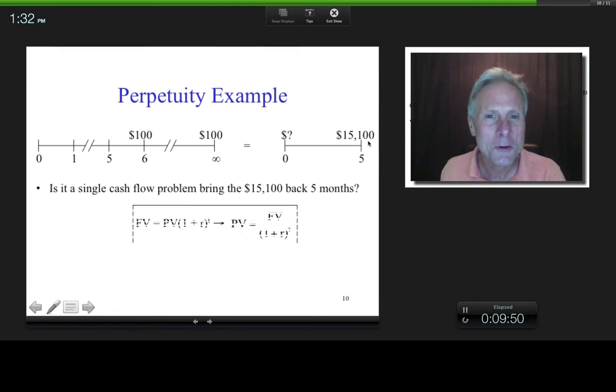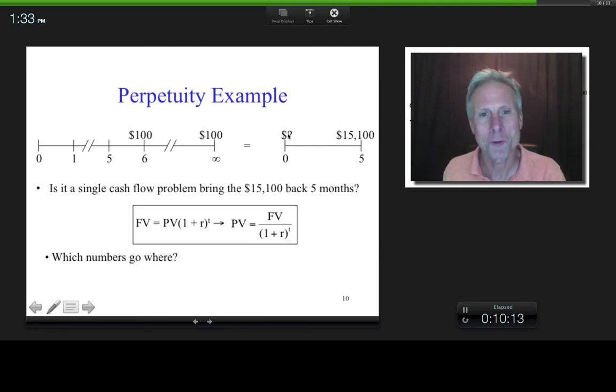So is it now a single cash flow problem to bring this back to time 0? It is, right? So what numbers would go where? What would be this guy? That would be my later value or my future value, right? So that would go there. What would be my present value? That's what I'm trying to solve for, right?